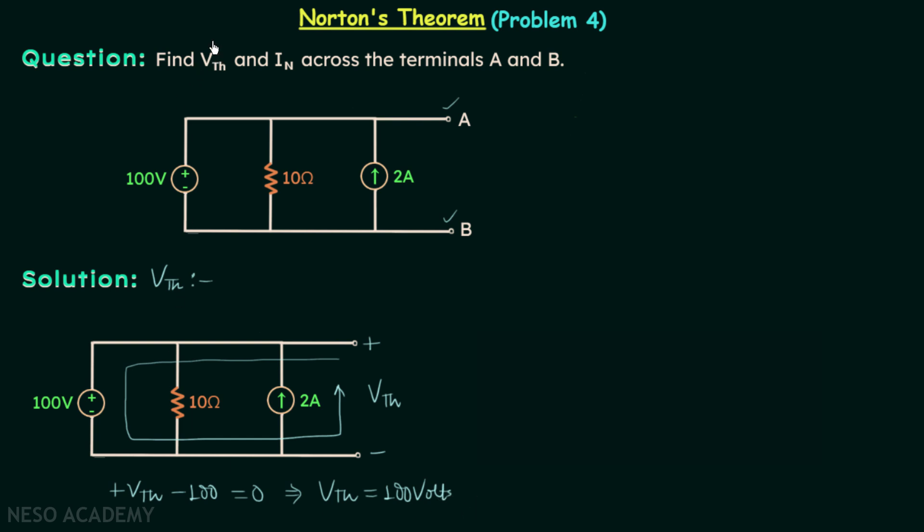So we are done with the calculation of Vth. Now we will move on to the calculation of In. For the calculation of In, we need to make one modification in this network. We will short circuit the two terminals, and the short circuit current is In.